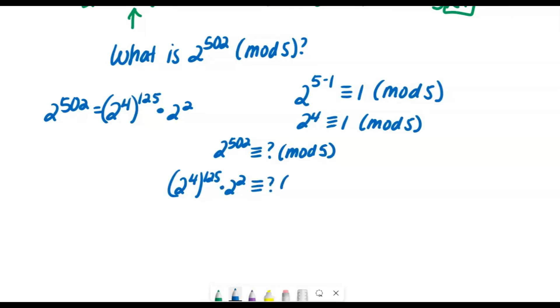So I'm wondering, what is this congruent to in mod five? Well, we already realized with this example that two to the power of four in mod five is congruent to one in mod five. So then from here, I can see that one to the power of 125 is one times four. So that must be congruent to four in mod five. So the answer, what is two to the power of 502 in mod five? The answer is four.